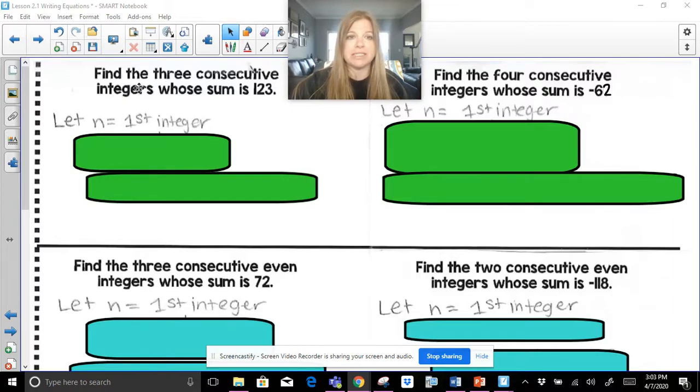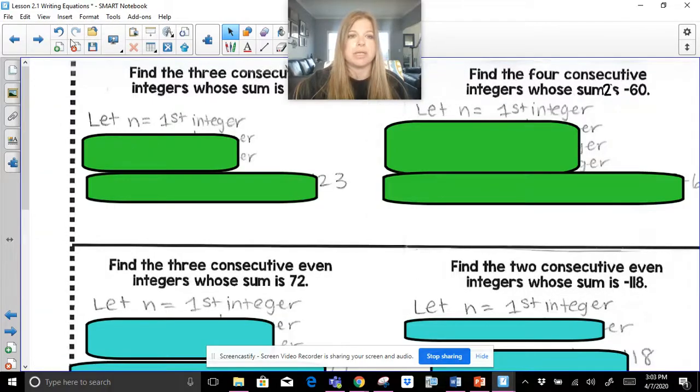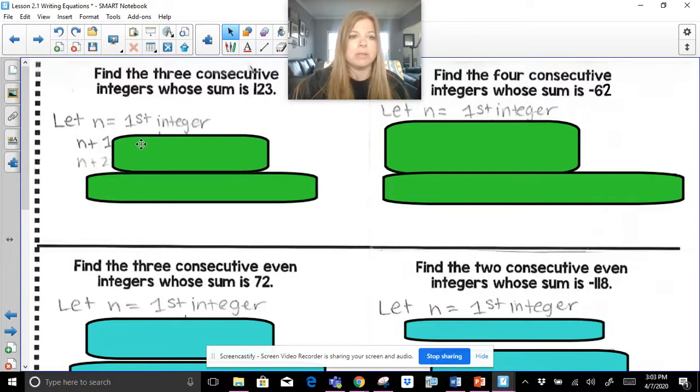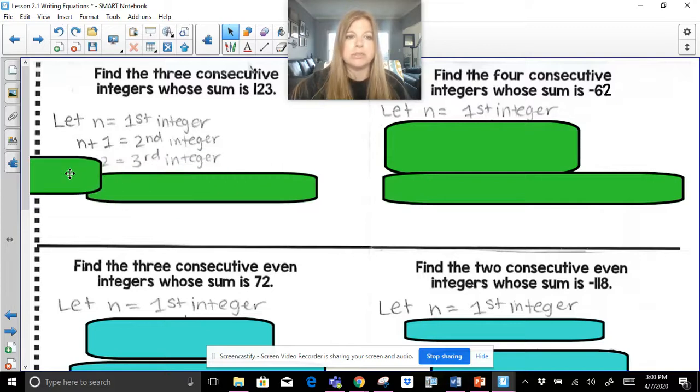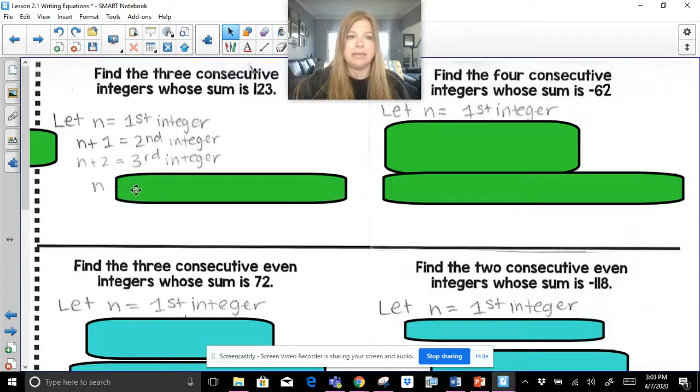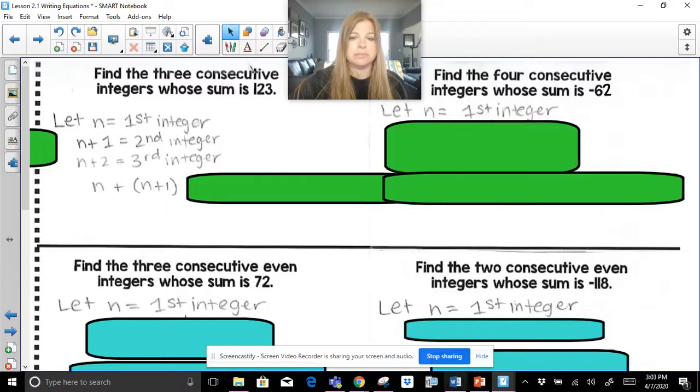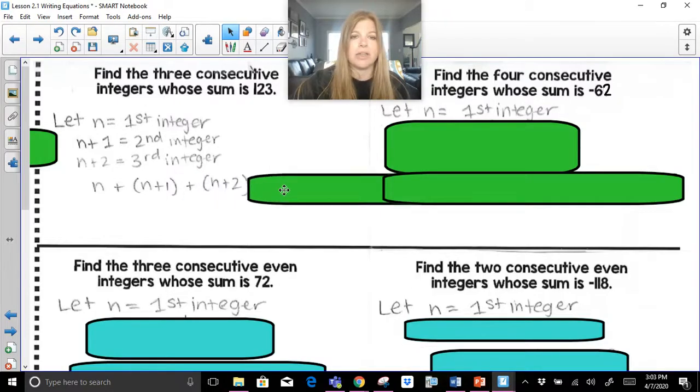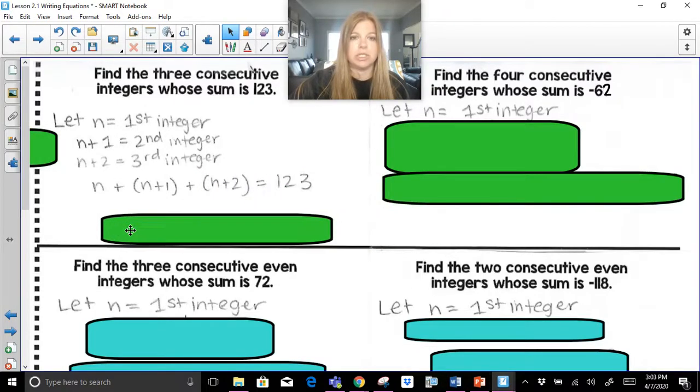So here it says find the three consecutive integers whose sum is 123. So we would have to first define the variable, just like we did before. n is going to stand for the first integer. n plus 1 would stand for the second integer. n plus 2 would stand for the third. And if it says find the three consecutive integers whose sum is 123, that would mean that n, the first integer, plus, because notice it says the sum...